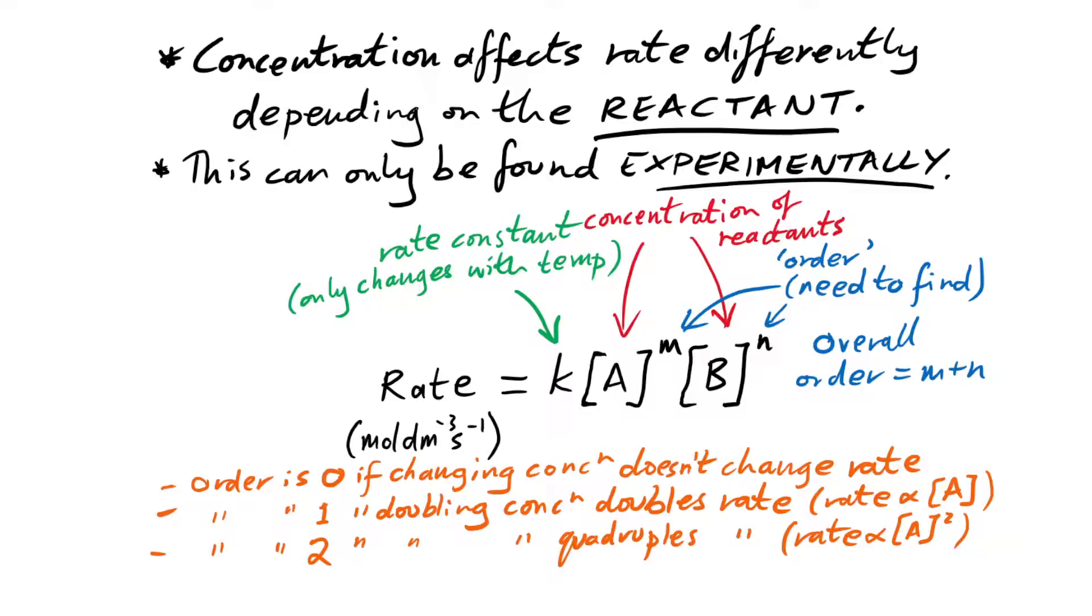So orders up to two are all we care about at A level. Rate is always measured, by the way, in moles per decimetre cubed per second. You can probably see from those units that it's telling you how the concentration is changing over time. The concentration of what? The concentration of the reactant. That's how we measure rate properly. The rate constant that is specific to a reaction is going to have a different number, and actually, it's going to have different units as well, depending on what the orders are. But it can change with temperature as well.